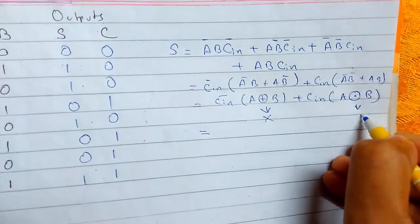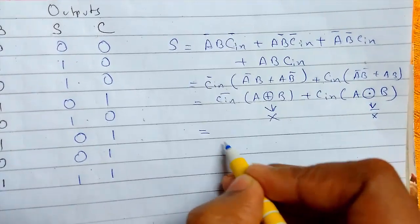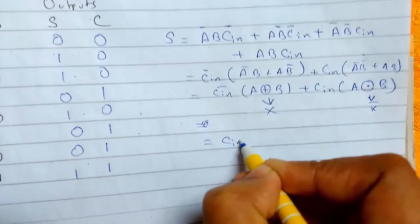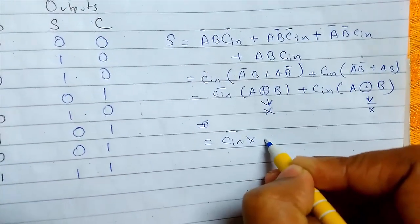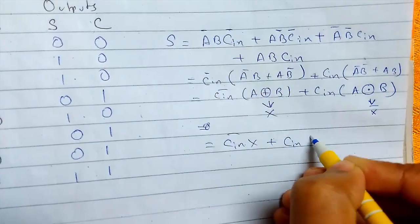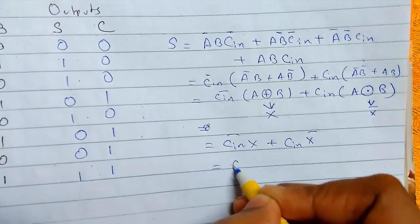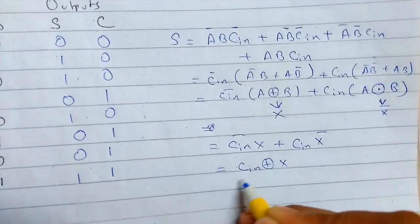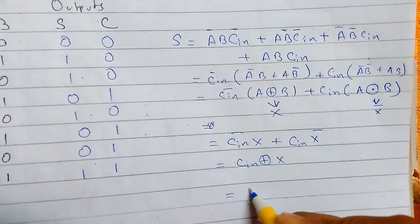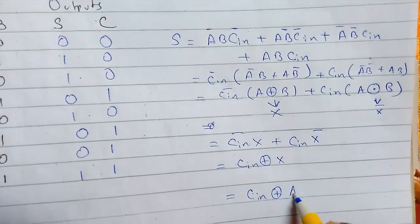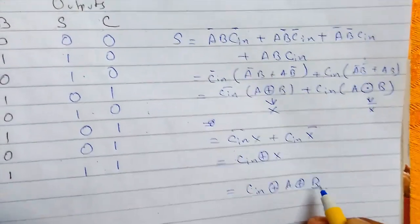This will be X-bar, so this will be C-in X plus C-in X-bar. This will be C-in XOR X, which is C-in XOR A XOR B. This is our final expression for sum.